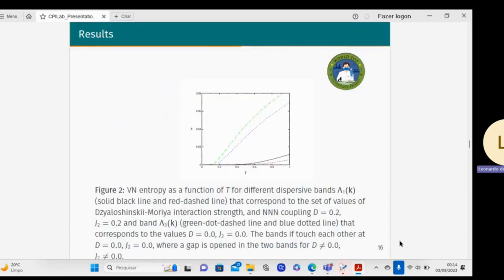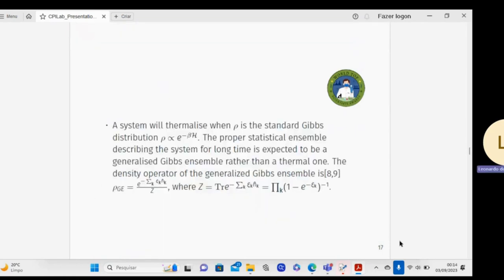I have in figure two the von Neumann entropy as a function of the temperature for different bands, specific bands for the Lieb lattice model of non-interacting electrons, where I have the system thermalized with the standard Gibbs distribution proportional to exponential of beta H. The proper statistical ensemble can be chosen for one-dimensional systems to be generalized as a generalized Gibbs ensemble rather than a thermal one.